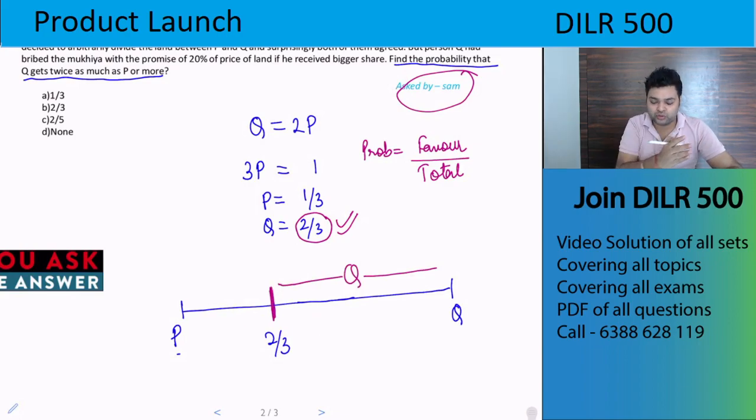Beyond this, Q can be anywhere. Now as this mark keeps shifting in this direction, Q will get more and more land, but all this entire case will come in favorable. This means if Q lies on this line segment, or if I say this pointer lies on this line segment, then in that case Q will have more than twice of P.